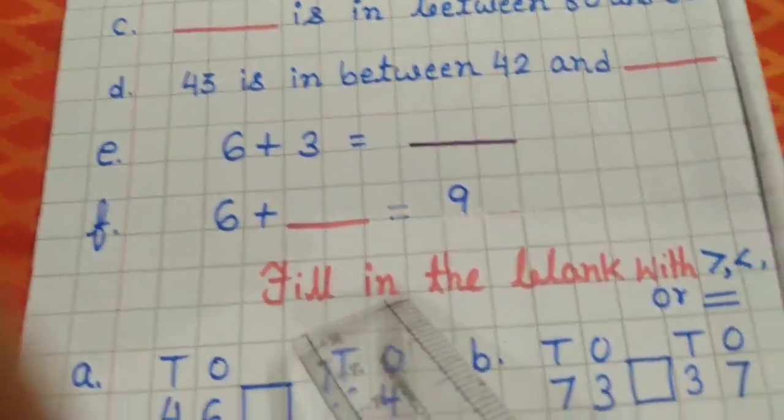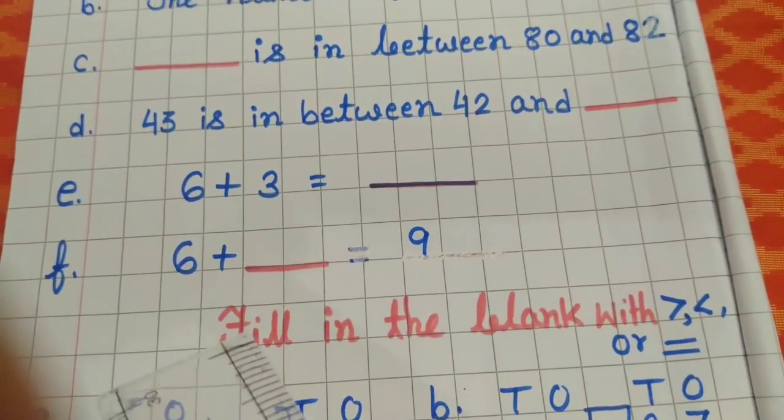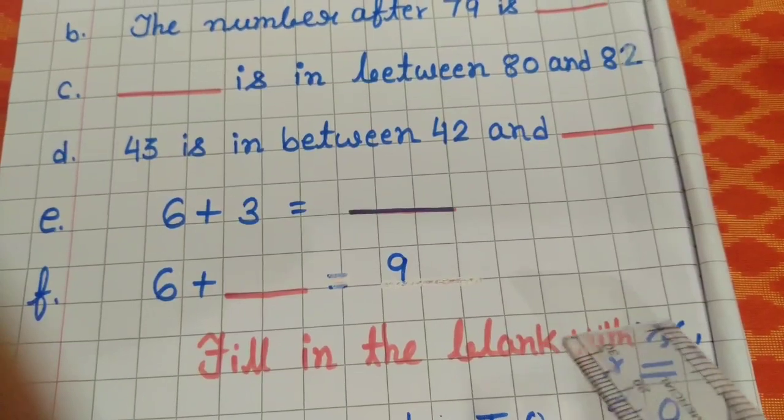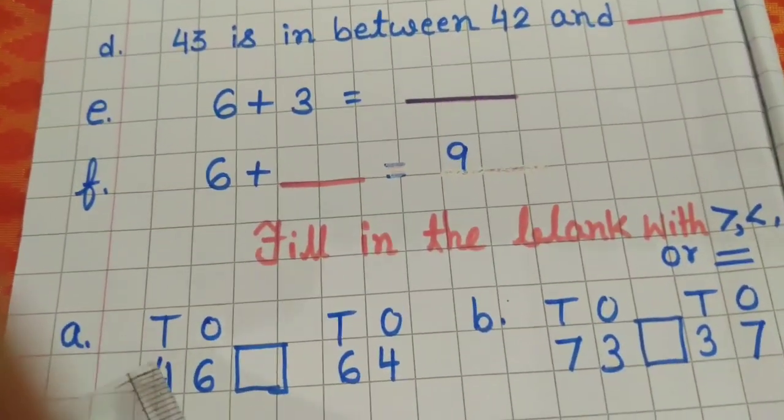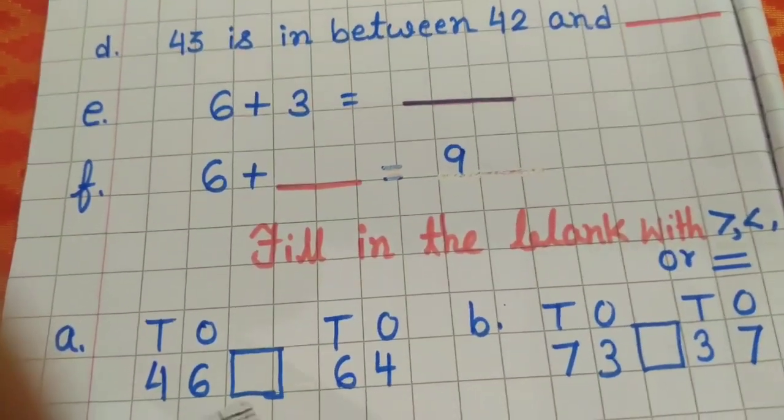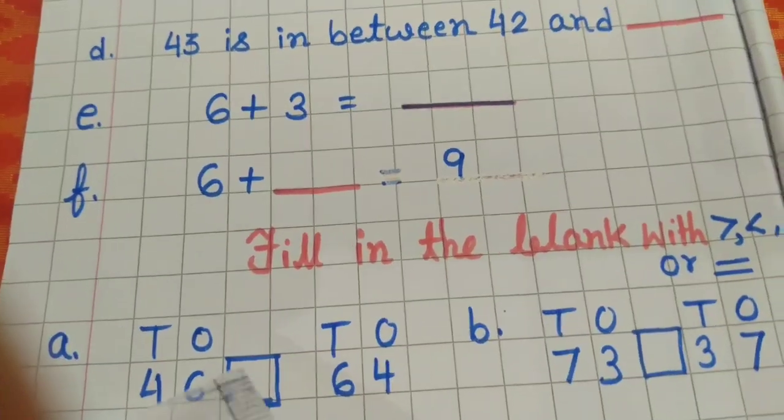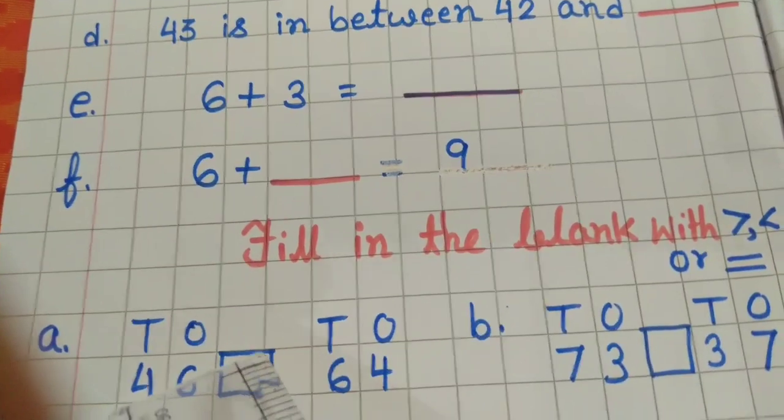Then here I have written another heading: fill in the blanks with greater than, less than or equal to. Number A. Here I have written two numbers, 46 and 64. So here you have to put the correct sign. Understood?